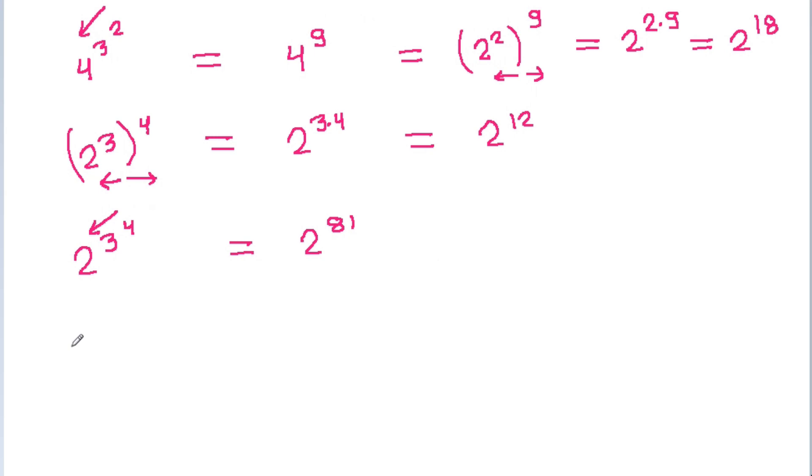So 2^81 is greater than 2^18, which is greater than 2^12. Therefore, 2^(3^4) > 4^(3^2) > (2^3)^4.